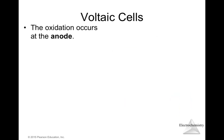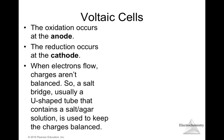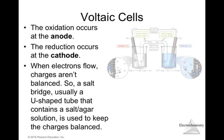Oxidation occurs at the anode and reduction occurs at the cathode. When electrons flow, charges must be balanced. A salt bridge — usually a U-shaped tube that contains a salt solution — is used to keep the charge balanced.